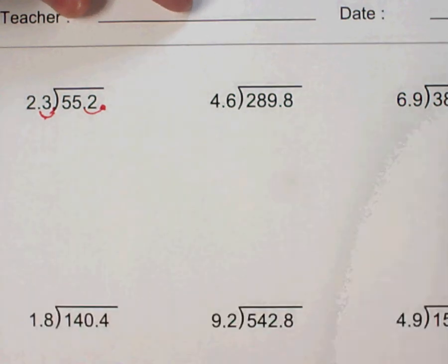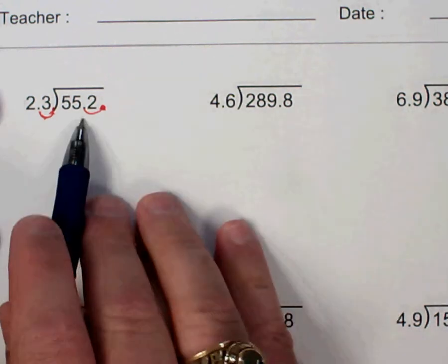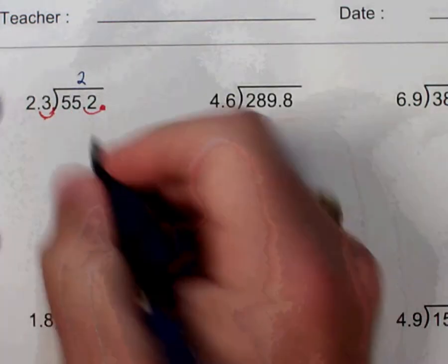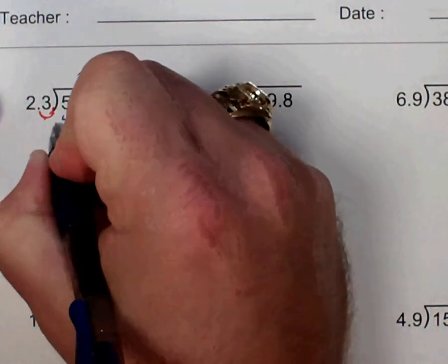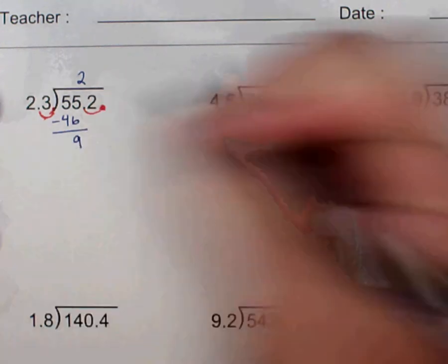And then I just complete the division as normal. So 23 will go into 55 twice. 2 times 23 will give me 46. And then I have to complete the subtraction, which will give me 9.